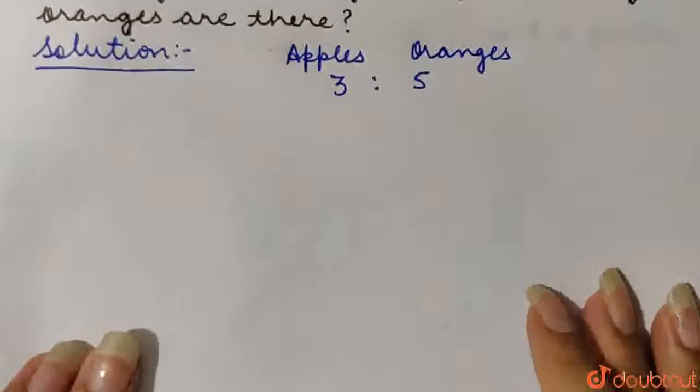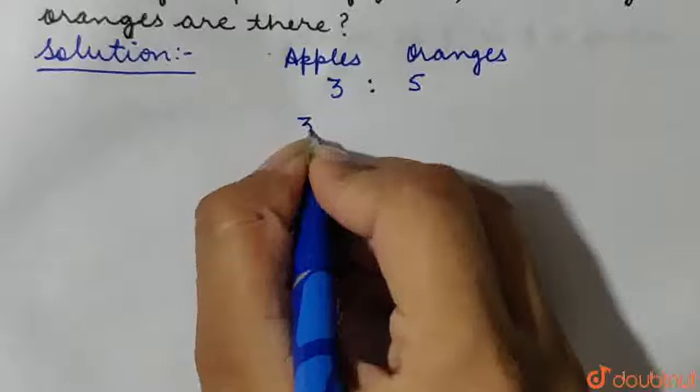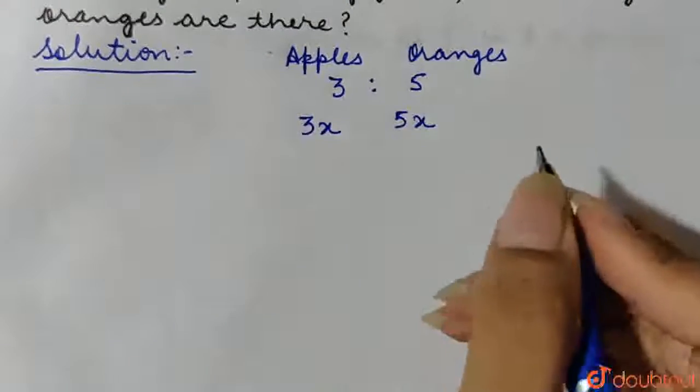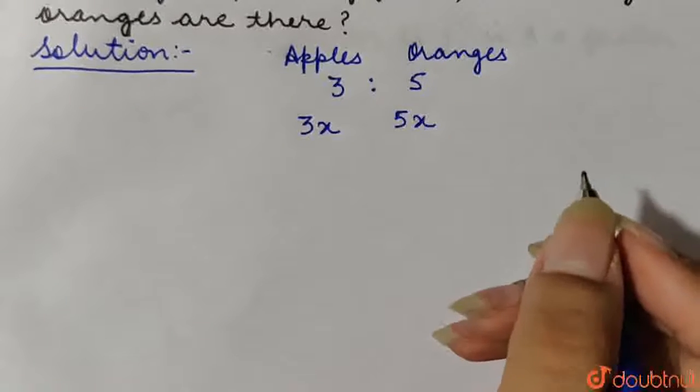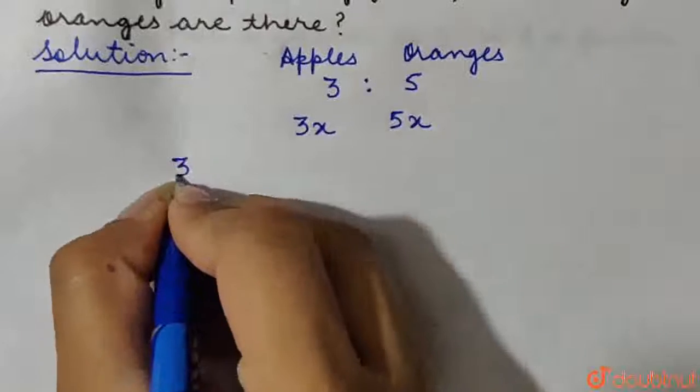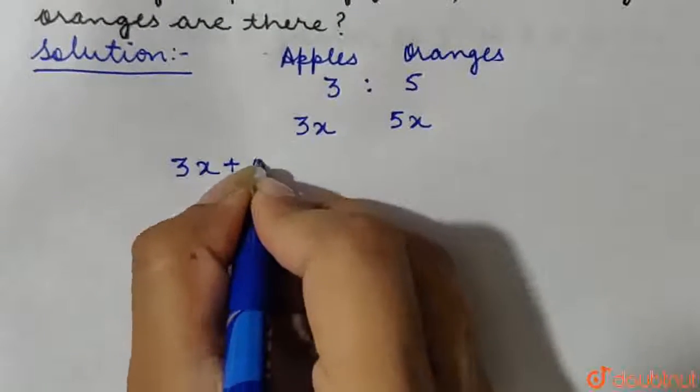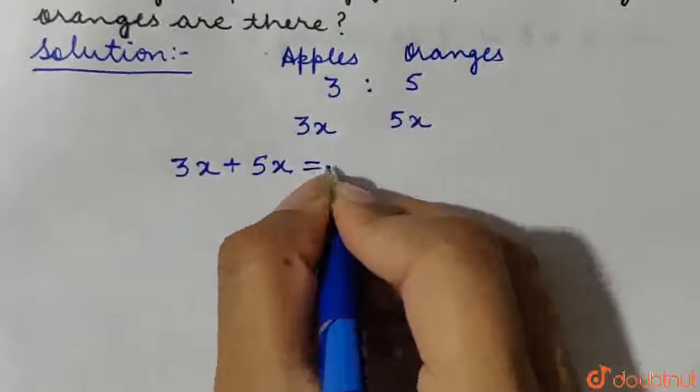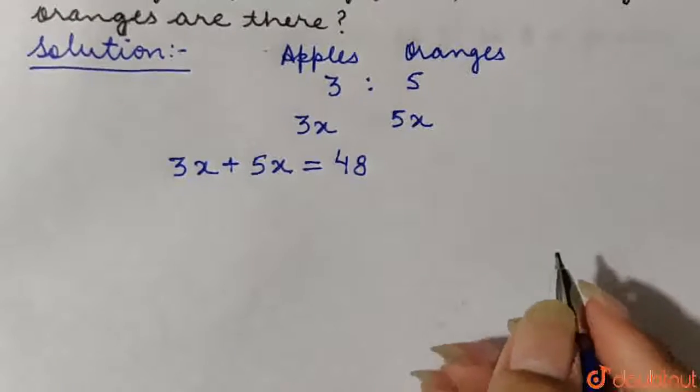Let us simplify by taking the number of apples as 3x and the number of oranges as 5x. Now we know that there are a total of 48 pieces of fruit. That means the total number of apples 3x plus the total number of oranges 5x is equal to 48. We can calculate the value of x from here.